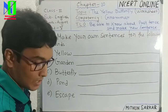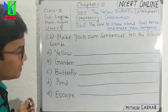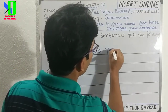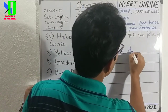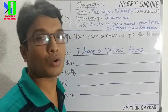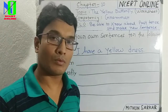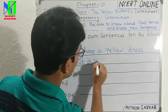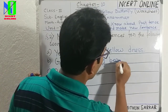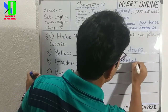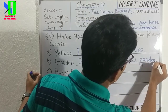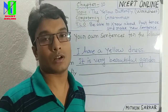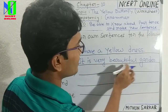'Yellow' means a colour. For example: I have a yellow dress. You can make more sentences too — you can write them in our video comment box. Then 'garden' — you can write very easily. For example: It is a very beautiful garden.